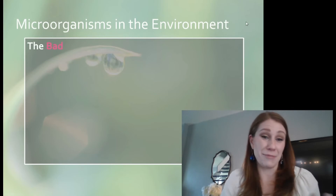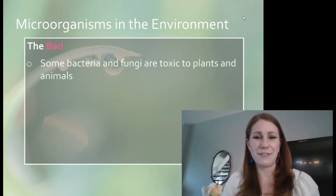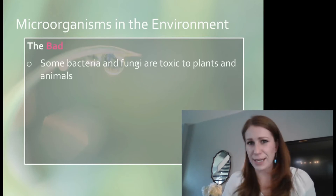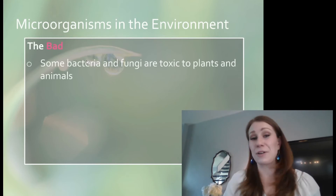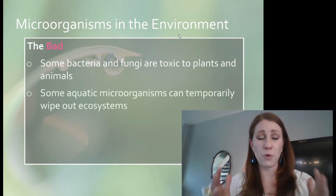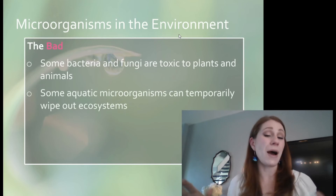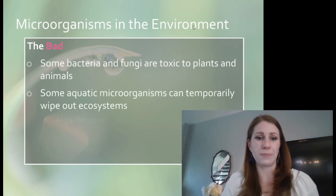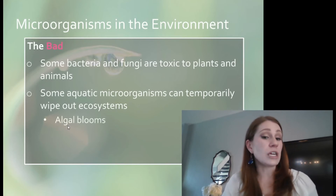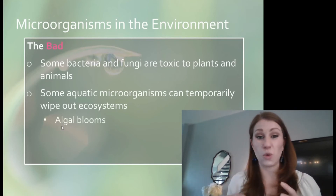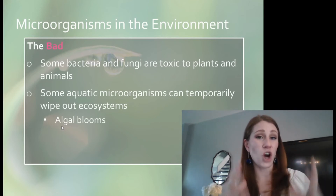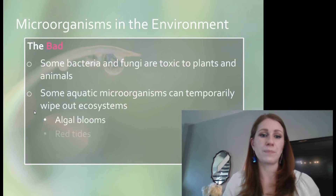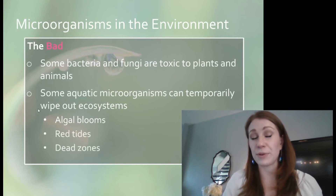However, we can also have not-so-helpful microorganisms. Bacteria and fungi can be toxic to plants and animals — if you eat the wrong kind of mushrooms, you will get sick, and you can get bacterial infections. Some aquatic microorganisms can wipe out ecosystems; they can start to grow and just take over the entire ecosystem. Things like algae, if they have the right conditions, can grow so much that they will literally choke out all the other life around them and be the only thing able to reproduce. Red tides and dead zones are other examples of this.